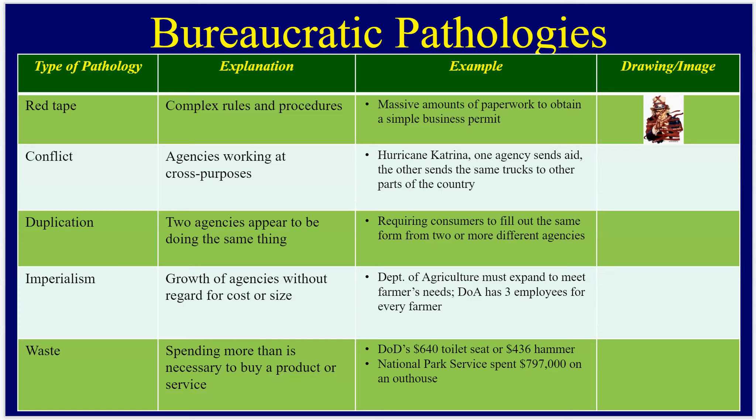The fifth pathology is waste — the $400 hammer, the $600 toilet seat, the $800,000 outhouse in the middle of nowhere by the National Park Service. How can we better use the American people's tax dollars more effectively? These five pathologies — red tape, conflict, duplication, imperialism, and waste — are the most common in the bureaucracy and really underscore the perception that big government is a threat to democracy, causing waste, fraud, abuse, and corruption.